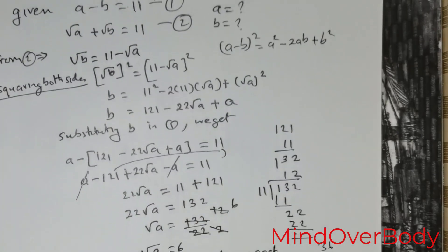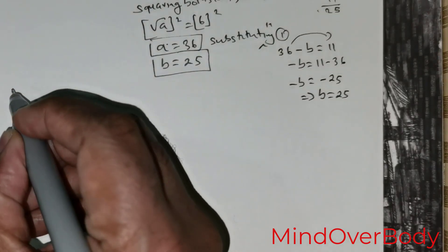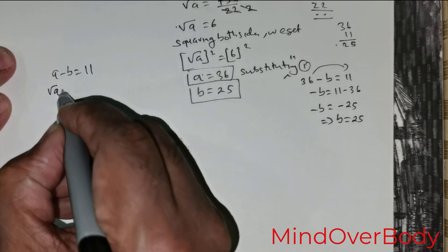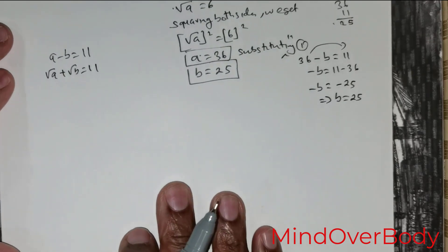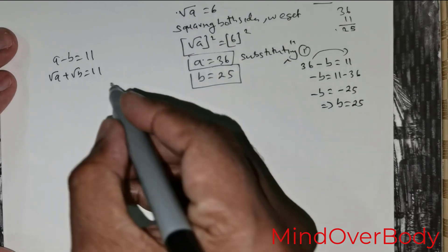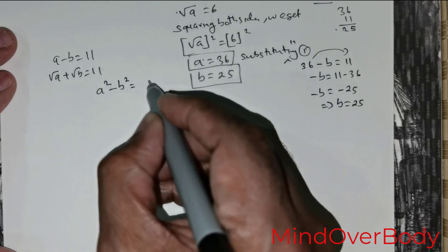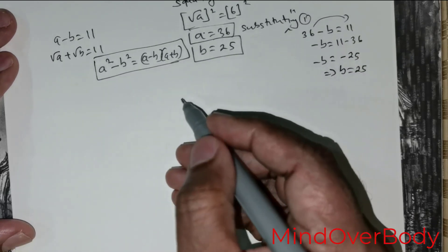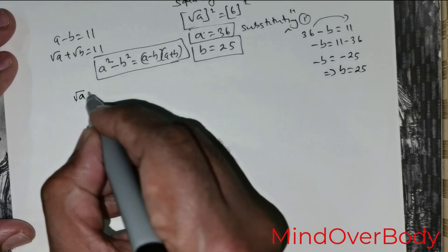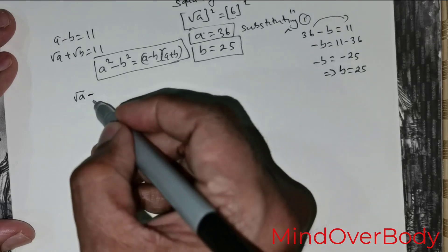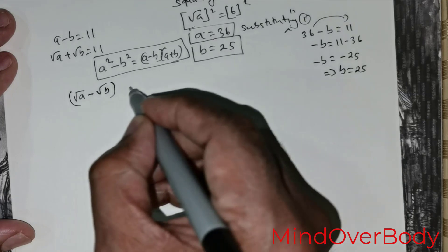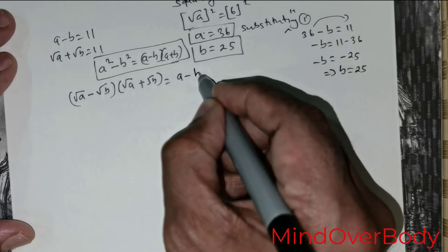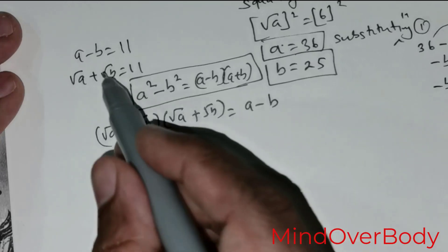I am going to approach the same question in another manner. This is the second method. We have that A negative B equals 11 and root of A positive root of B equals 11. We can use the algebraic formula A squared negative B squared equals A negative B times A positive B. So, root of A negative root of B multiplied by root of A positive root of B equals A negative B, because squaring the roots gives exactly A negative B.